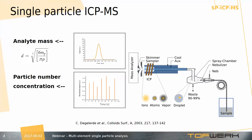The suspension has to be diluted in such a way that only a small fraction of these droplets contain particles and only one particle enters the ionization source at a time. When a droplet containing particles enters the ICP, it undergoes vaporization and atomization, forming an atomic cloud of ions which are sampled from the atmospheric pressure ICP into the mass spectrometer. The ions are separated according to their mass-to-charge ratio inside the mass analyzer and detected in the form of extremely short transient signals, lasting usually a fraction of a millisecond.